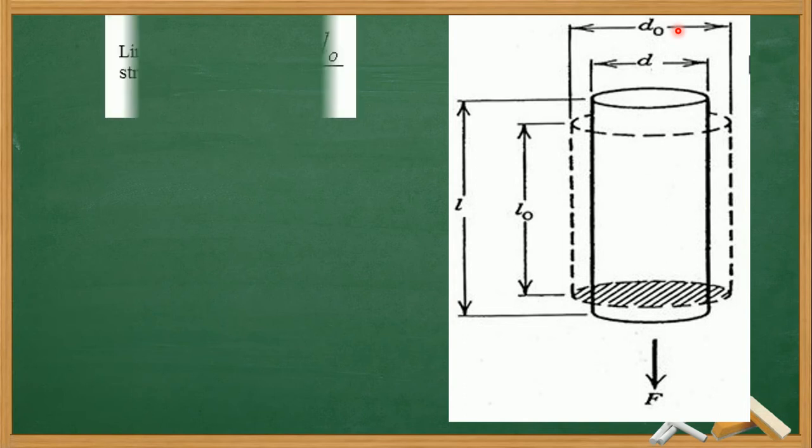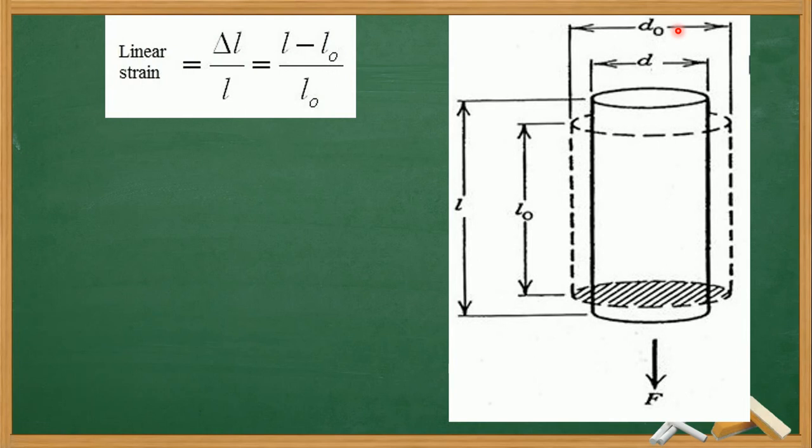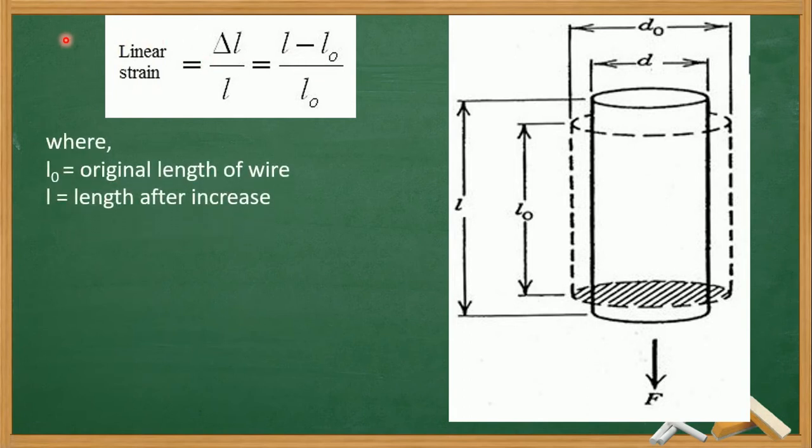We can write linear strain or longitudinal strain is equal to change in length divided by original length. Change in length is delta L divided by original length L0, which means L minus L0 divided by L0 is the longitudinal strain, where L0 is the original length of wire and L is the length after increase.